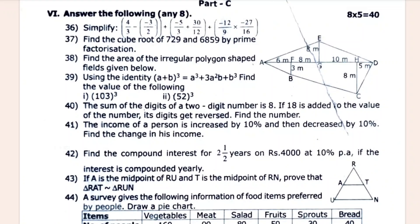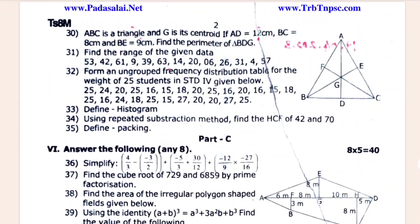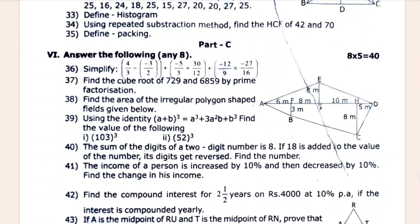Find the cube root of 729. Find the area of an irregular polygon. Listen to the options and choose the option which is correct.